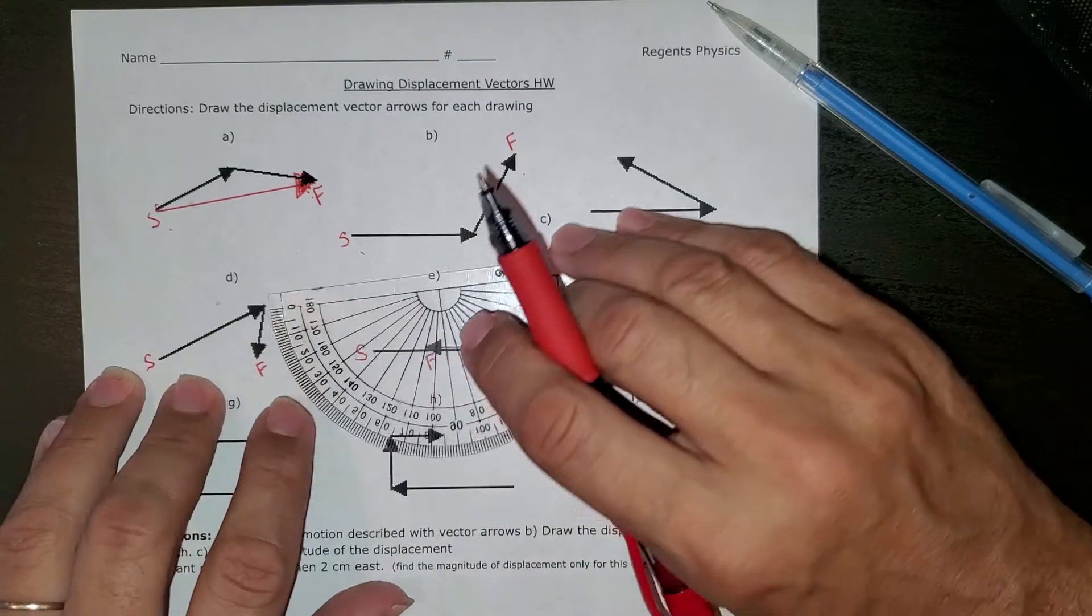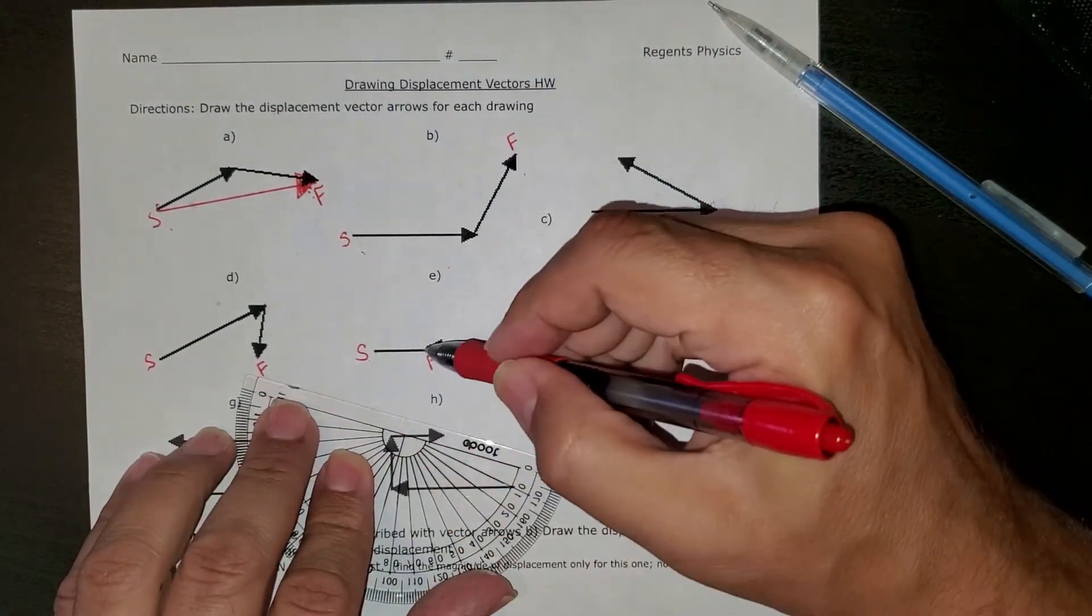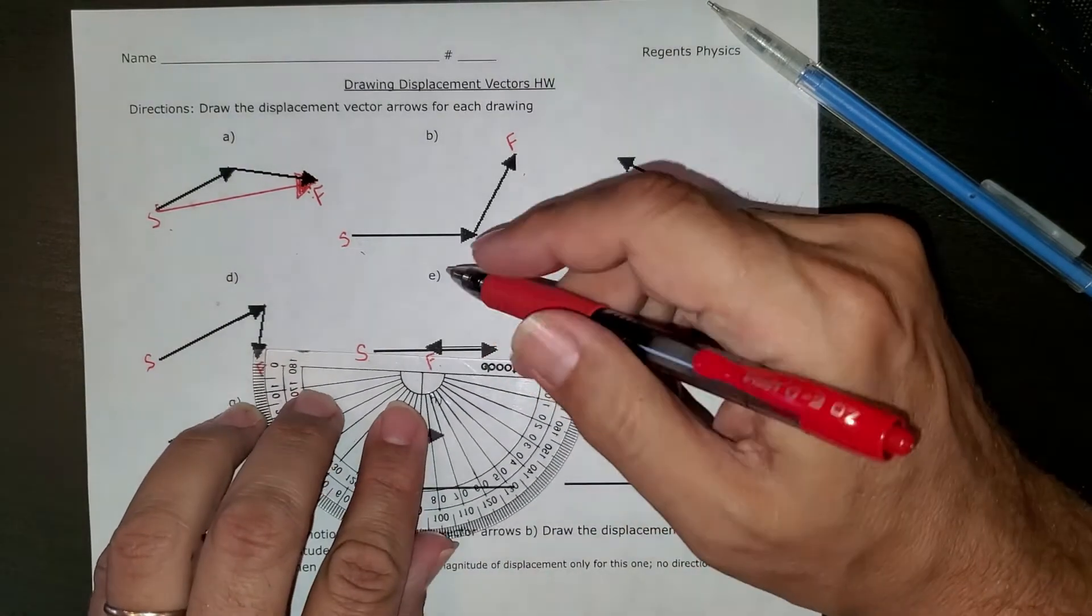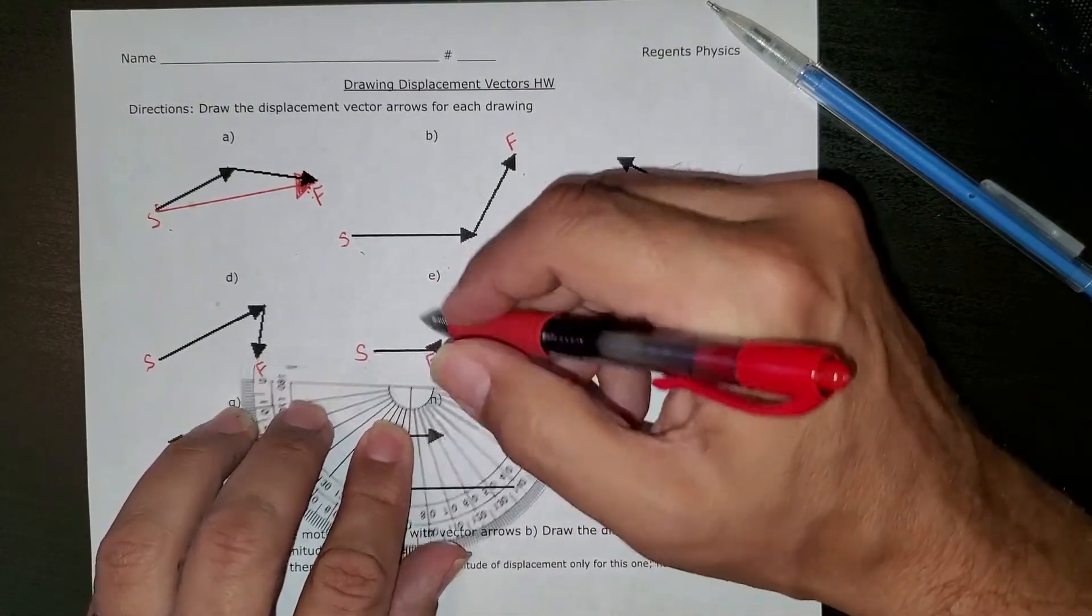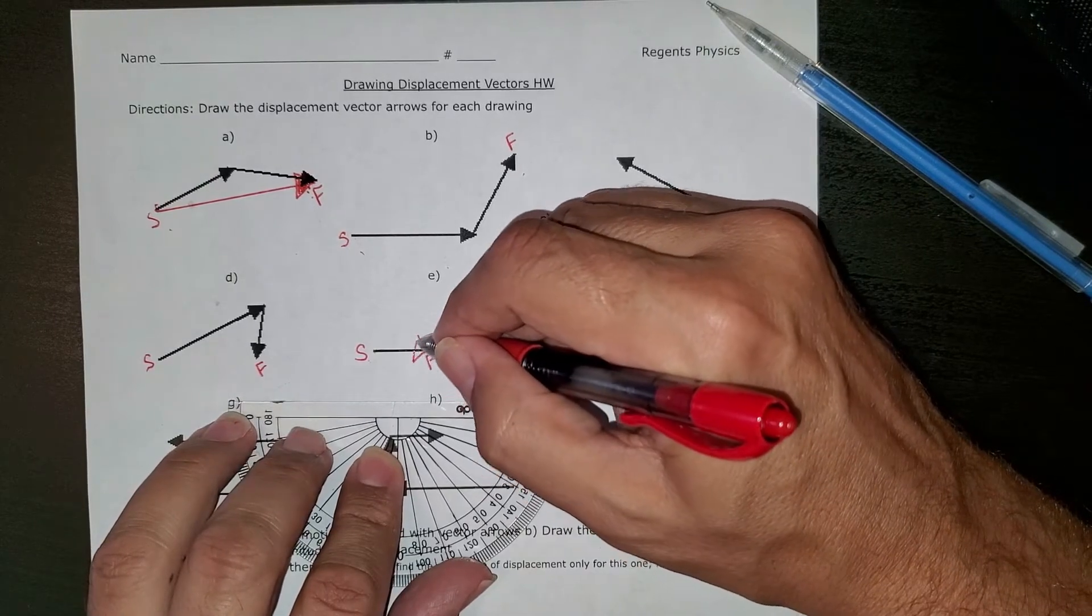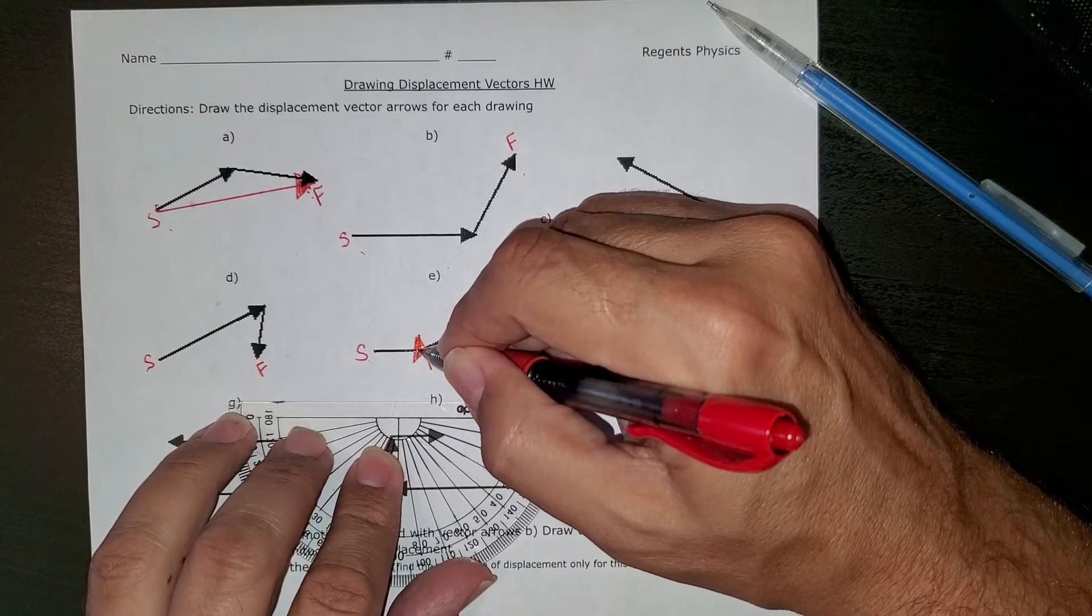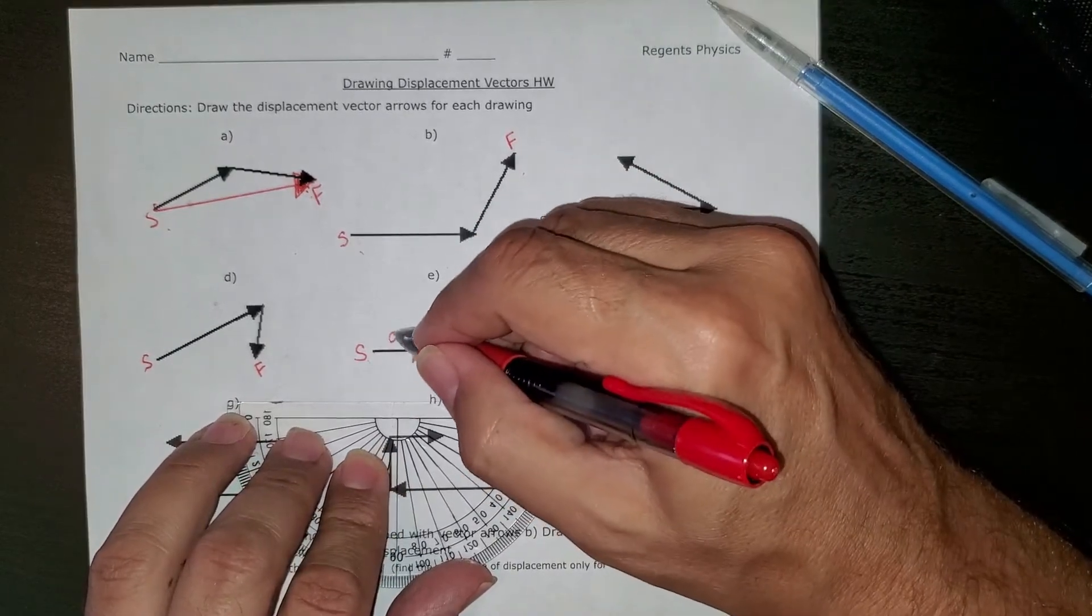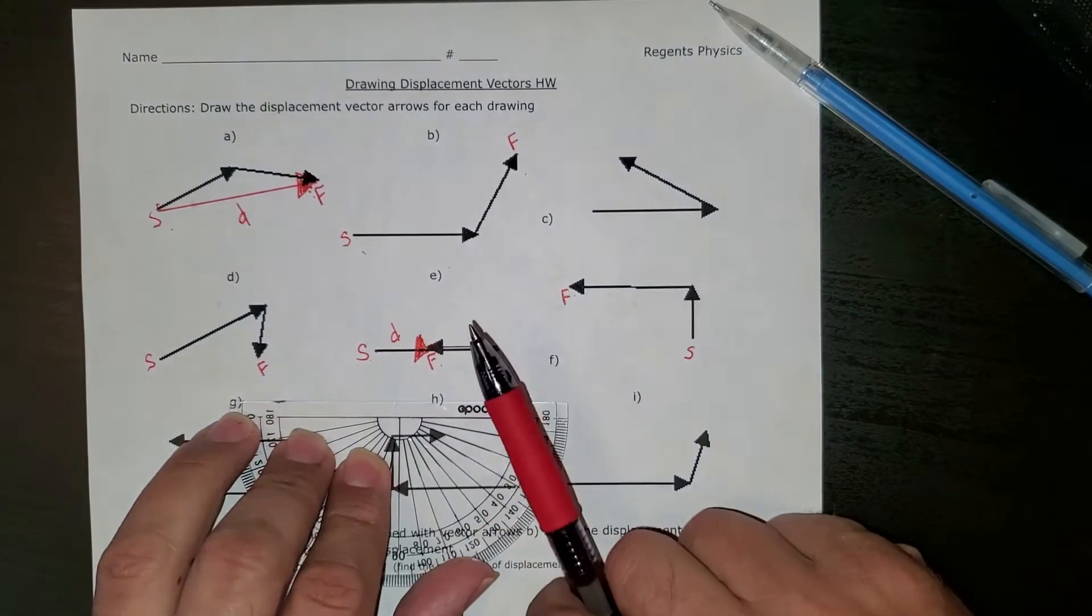I'll do another one for you. Let me do a tough one. There's the start and there's the finish because there's the arrowhead. We'll connect them nice and dark, and we always put an arrow because displacement—that's not a good arrowhead, but this is the kind of arrowhead I want you to use all year long. Let's label it D for displacement.